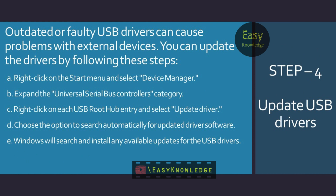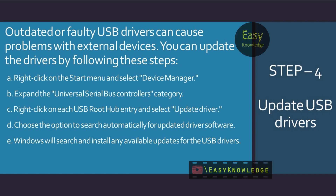Step 4: Update USB Drivers. Outdated or faulty USB drivers can cause problems with external devices. You can update the drivers by following these steps. Right-click on the Start menu and select Device Manager. Expand the Universal Serial Bus Controllers category. Right-click on each USB Root Hub entry and select Update Driver. Choose the option to search automatically for updated driver software. Windows will search and install any available updates for the USB drivers.